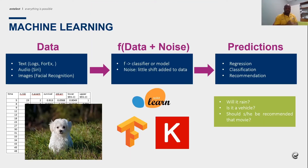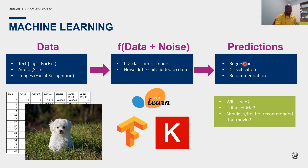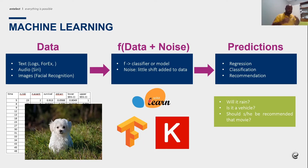Machine learning is the activity where the computer learns by experience. The experience is essentially the data; the processing is a function that uses the data with a bit of noise so that the computer doesn't think the world is perfect. At the end of the day we get predictions — that's what machine learning is for. The data can be images, text, or voice signals. Frameworks include TensorFlow, Keras, scikit-learn, Gluon, MXNet, and Theano.